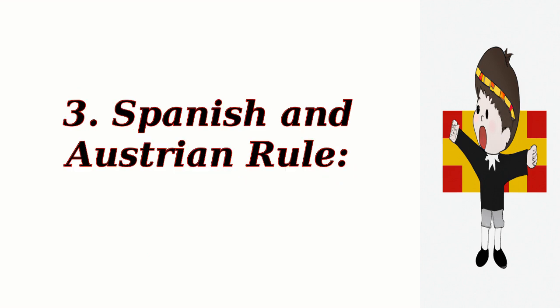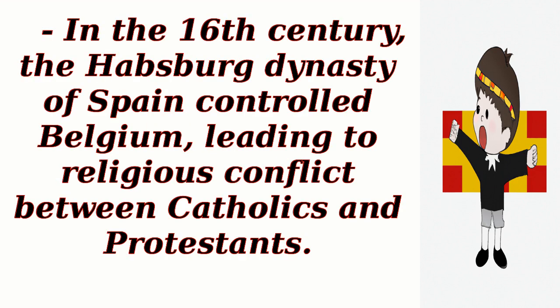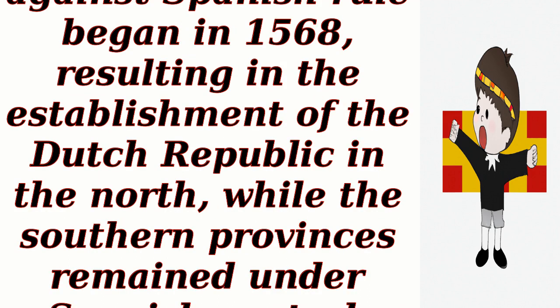Spanish and Austrian Rule. In the 16th century, the Habsburg dynasty of Spain controlled Belgium, leading to religious conflict between Catholics and Protestants. The Dutch revolt against Spanish rule began in 1568, resulting in the establishment of the Dutch Republic in the north, while the southern provinces remained under Spanish control.